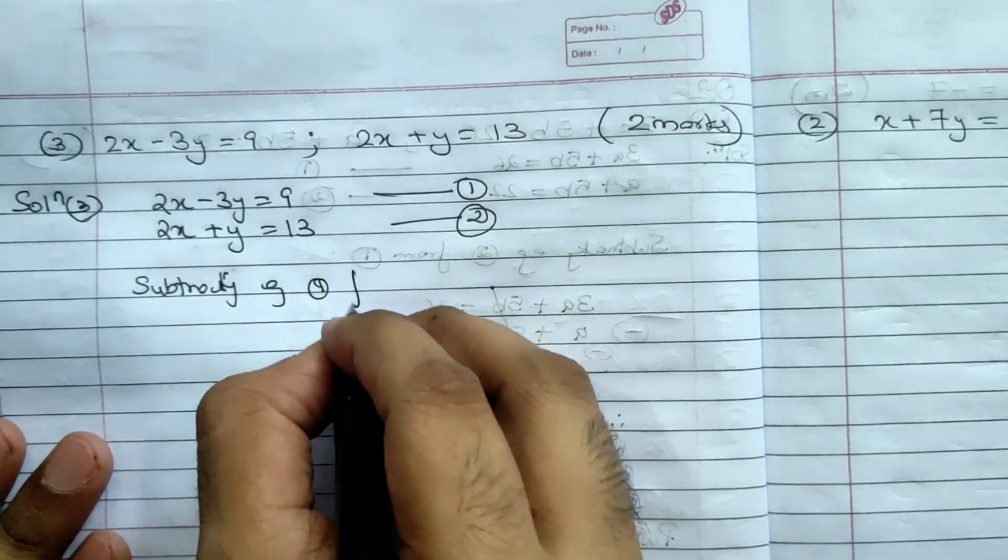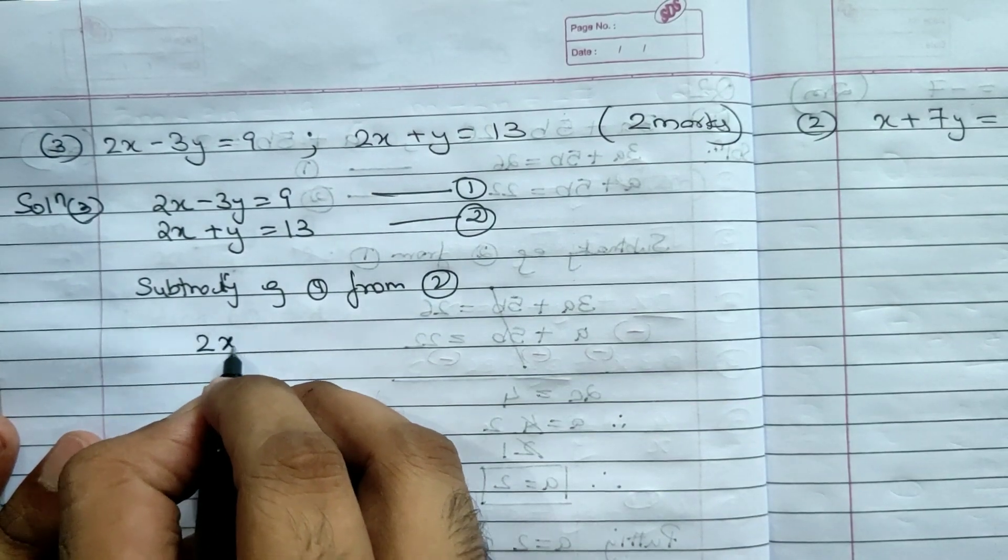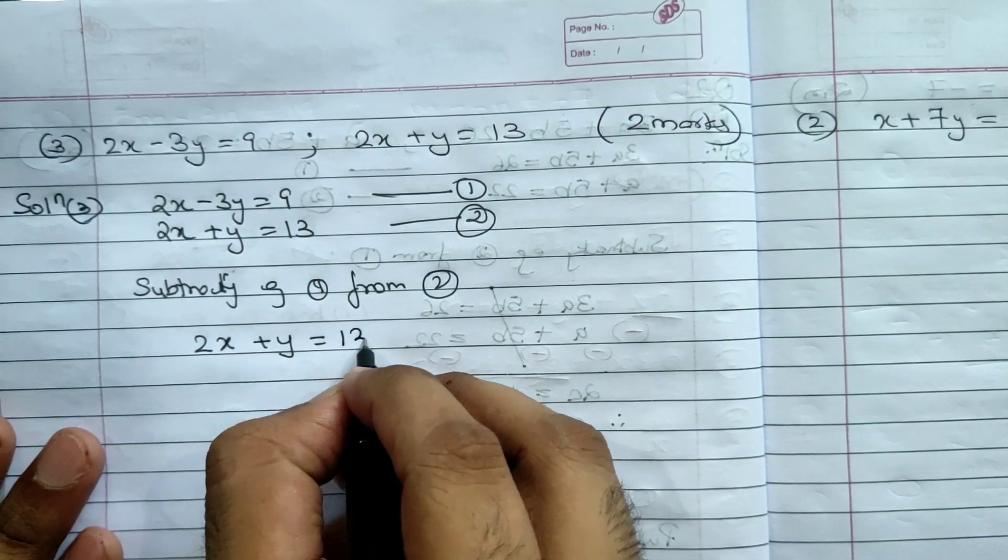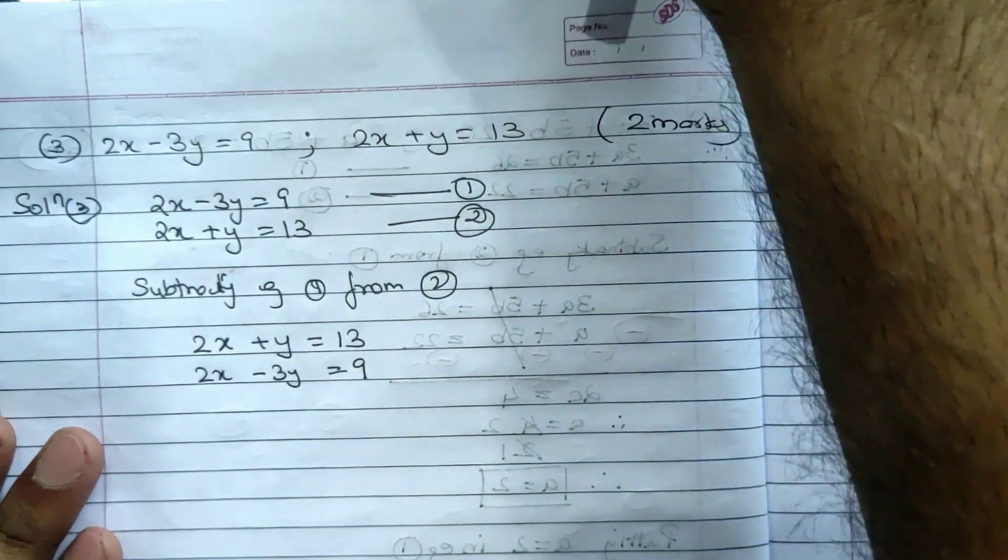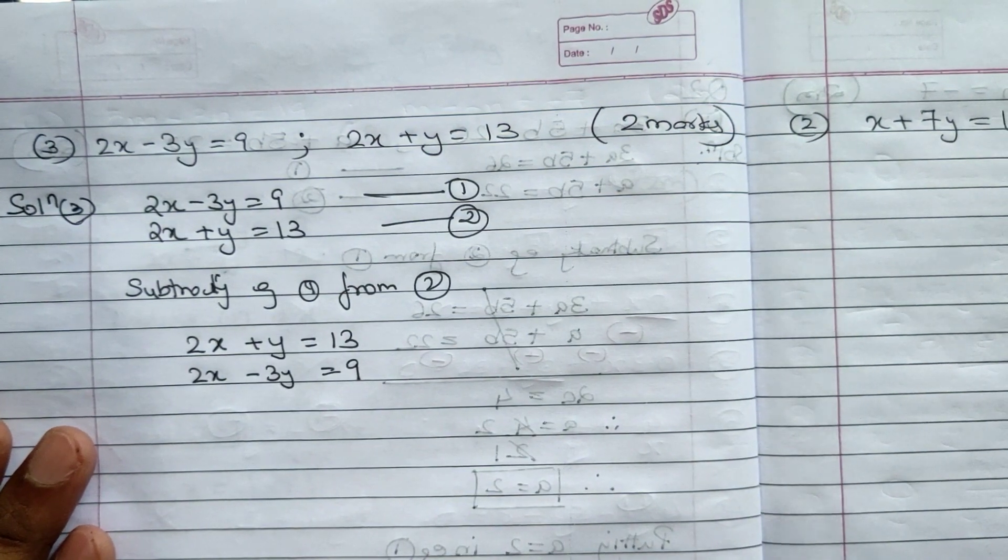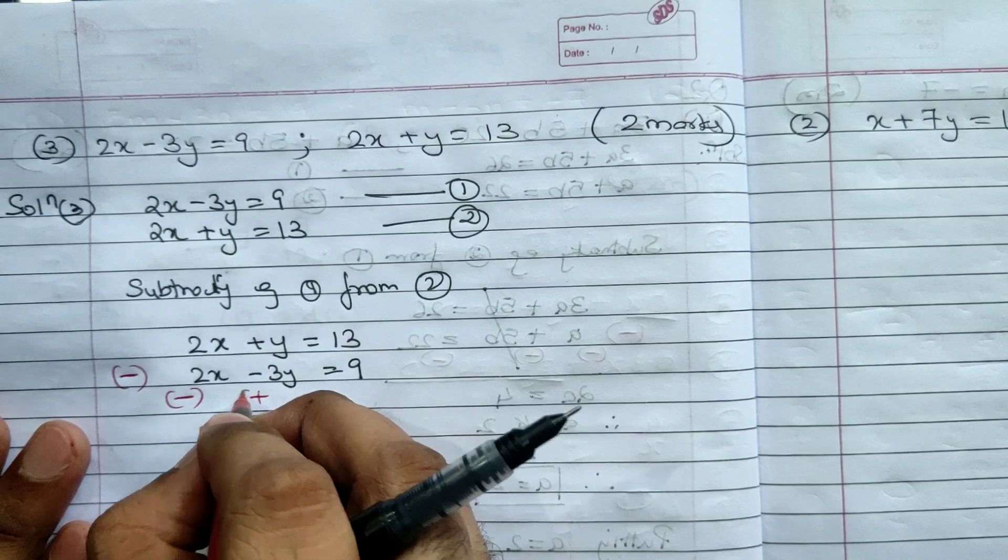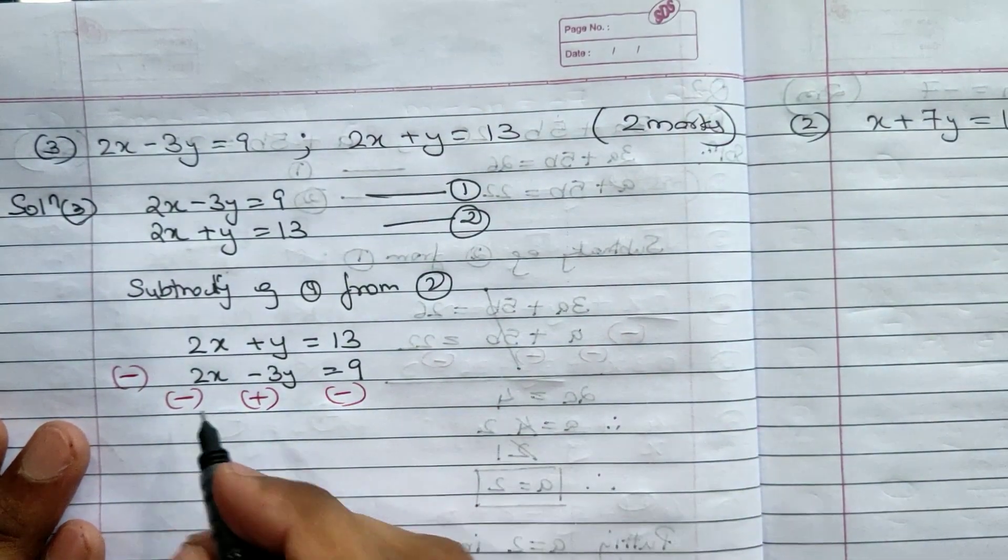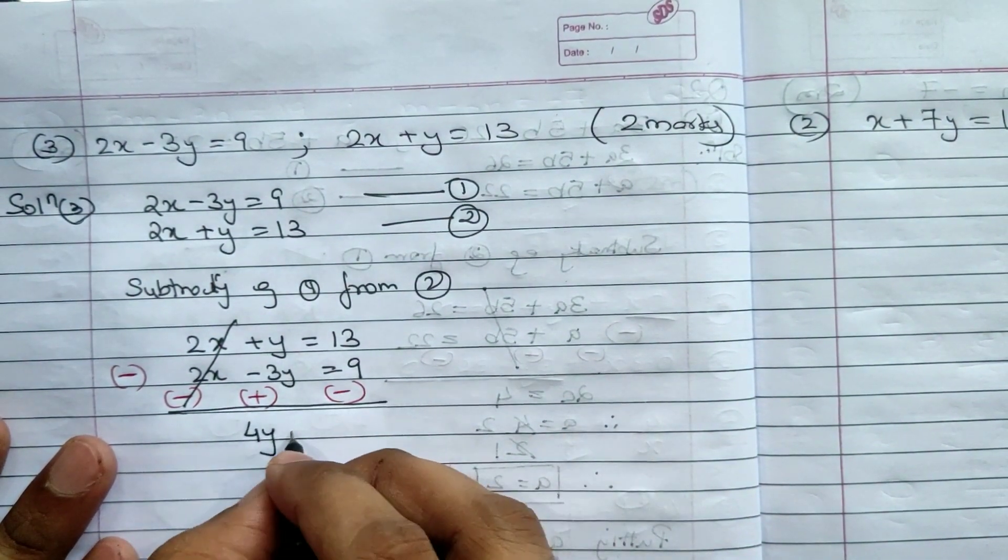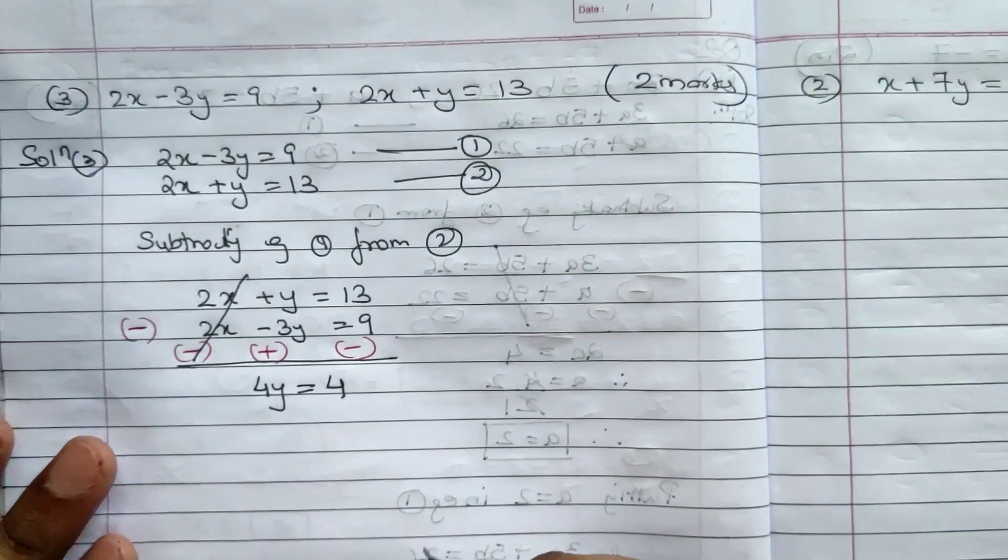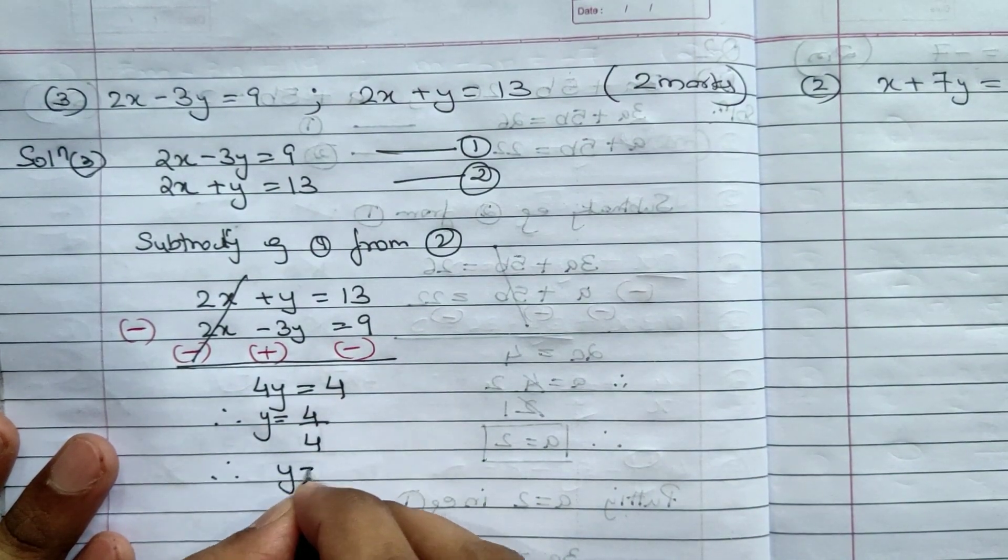For elimination we can subtract or add. Whether we subtract or add depends on sign. 2x here, 2x here - signs are same, so we minus. If sign is different we would plus. Let's write - subtracting equation 1 from 2. 2x plus y equals 13 minus 2x minus 3y equals 9. In subtraction the signs will change. So minus 2x becomes minus 2x, this becomes plus 3y, this becomes minus 9.